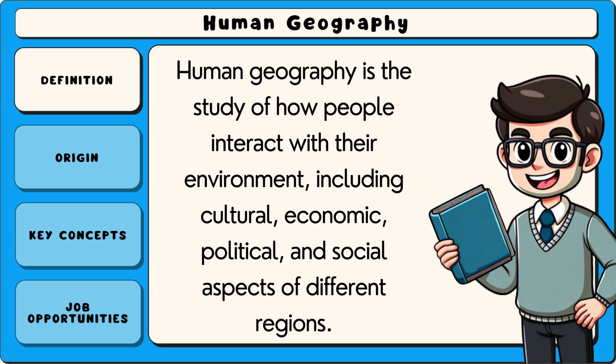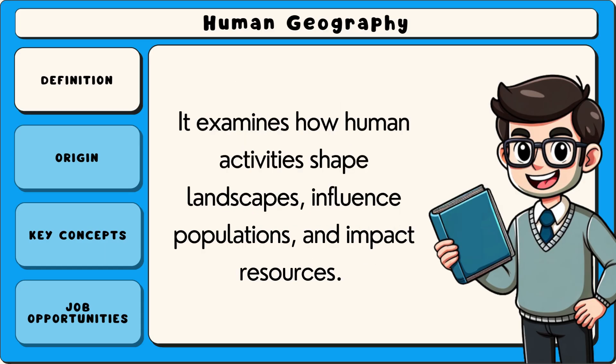Human geography is the study of how people interact with their environment, including cultural, economic, political and social aspects of different regions. It examines how human activities shape landscapes, influence populations and impact resources.